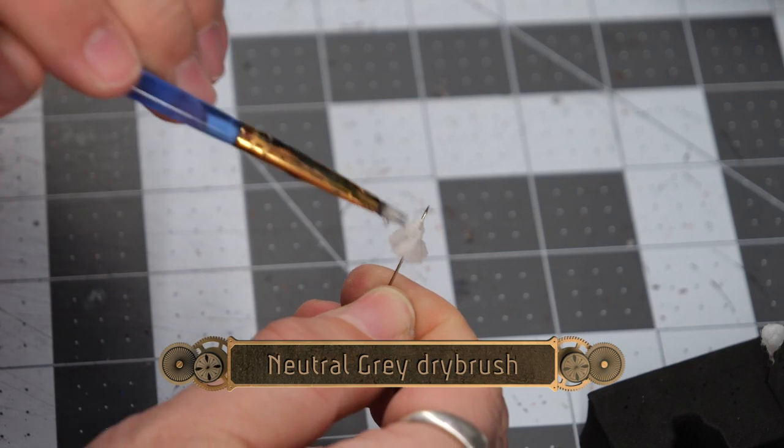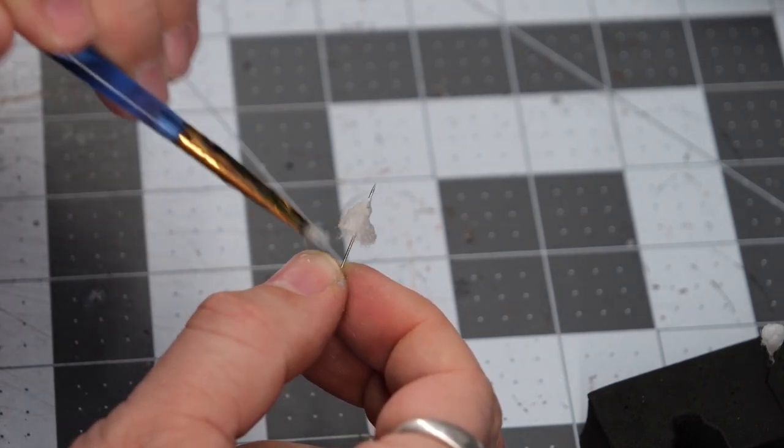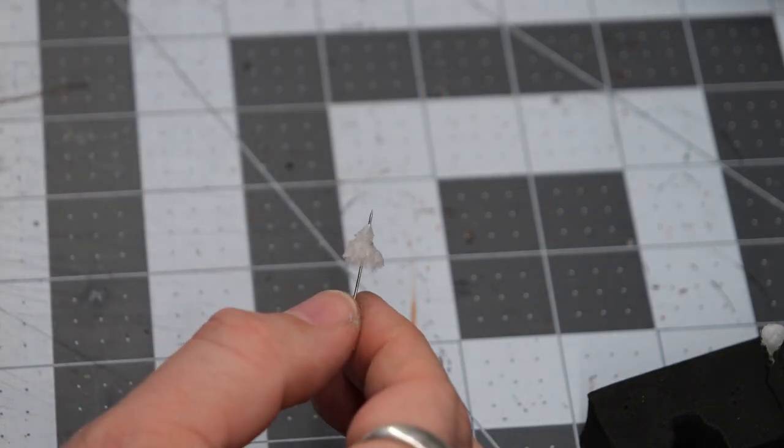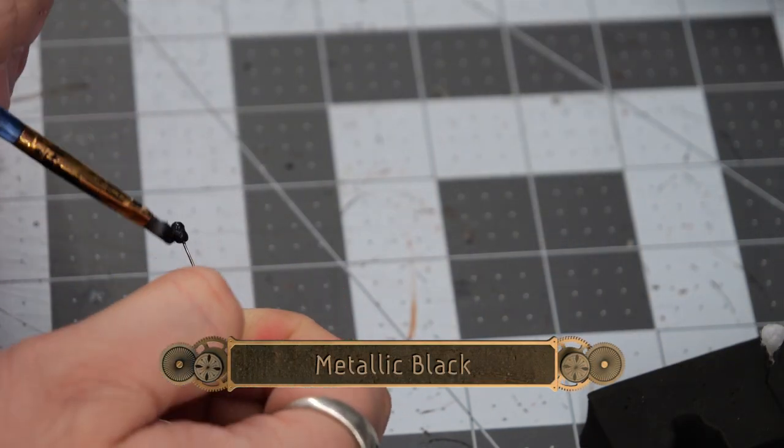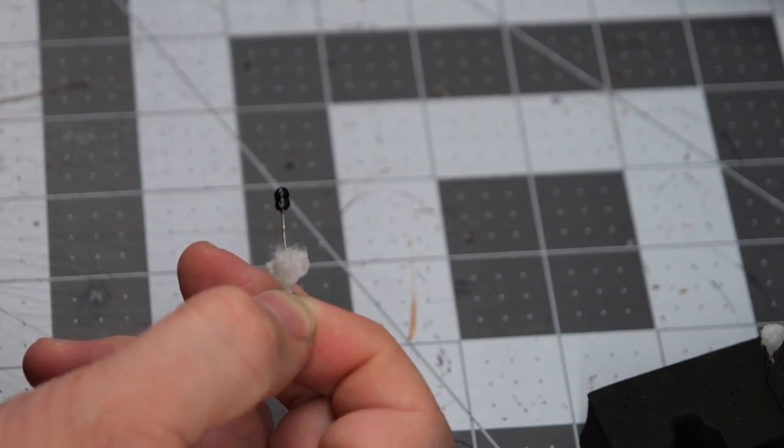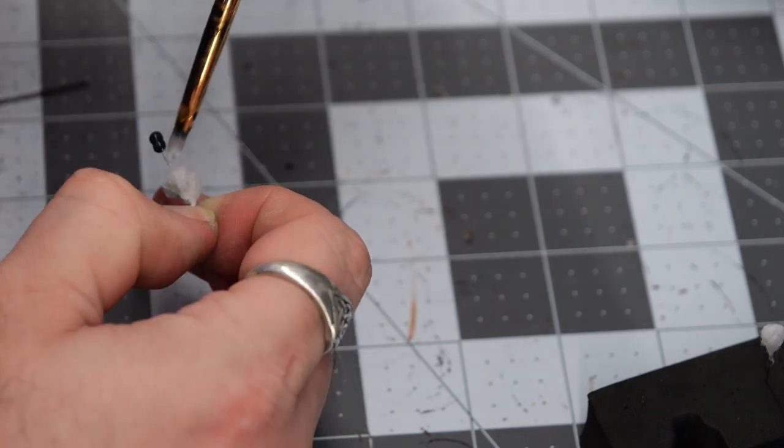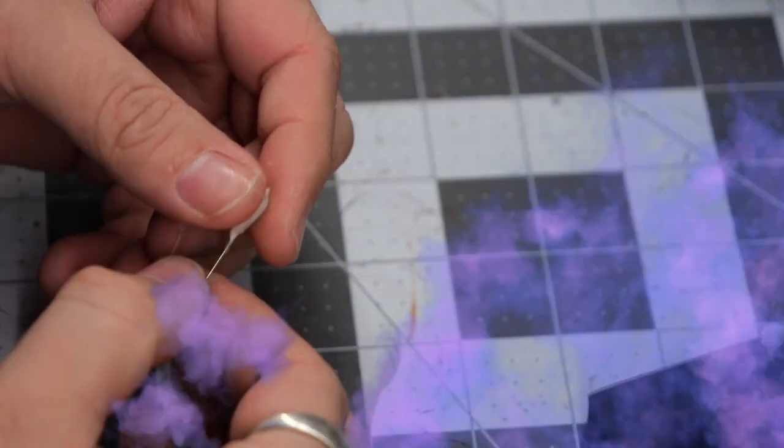Once the super glue is dry, we're going to do a light to medium dry brushing of neutral gray. This is going to give a smoky appearance to the plume. Then we're going to paint the projectile itself with some metallic black, and I followed it up by painting the metal part of the pin with neutral gray as well to create the illusion of a smoke trail.